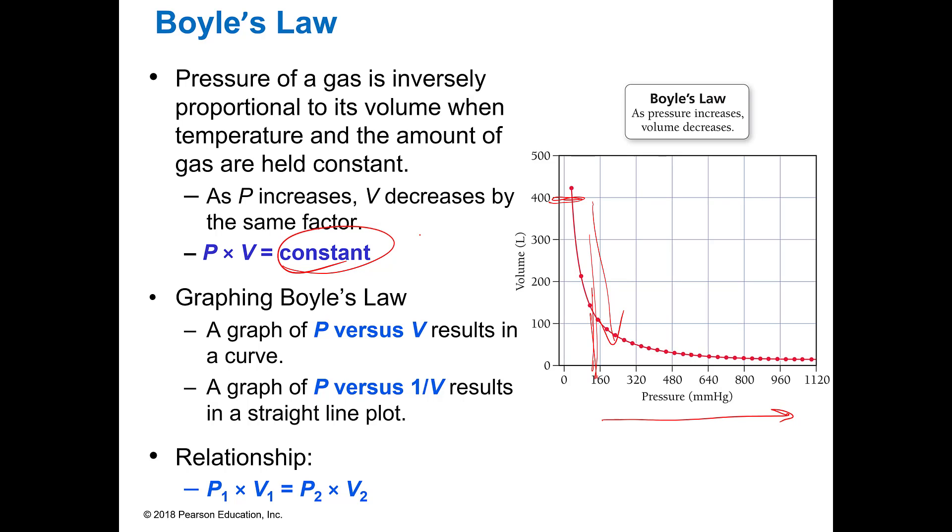Another way of saying that relationship is that if I have a situation where I have a pressure and a volume, if I make changes to that, that's got to still be equal to the new pressure times the volume. Because when I'm changing it, it's going to come back to that constant relationship.